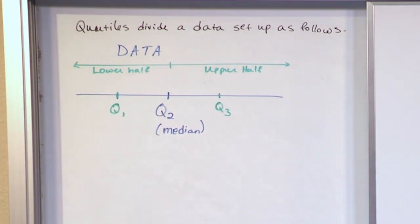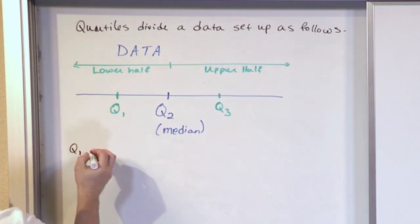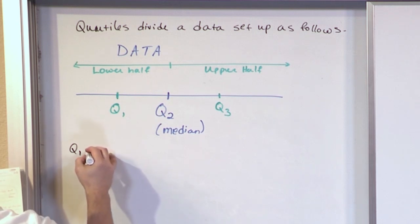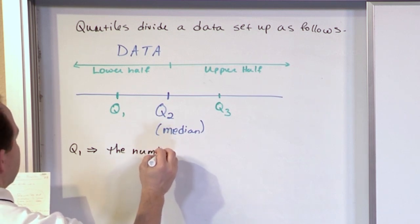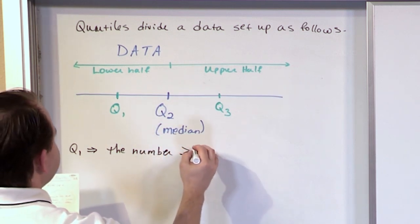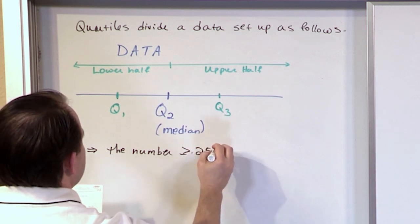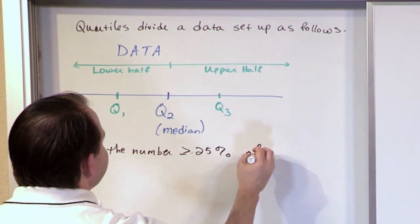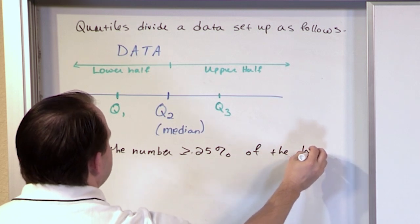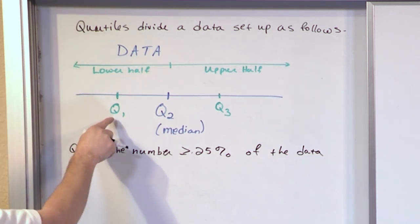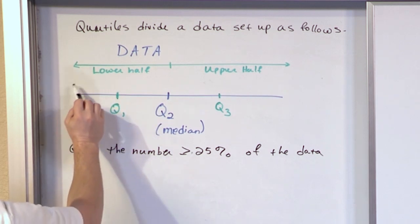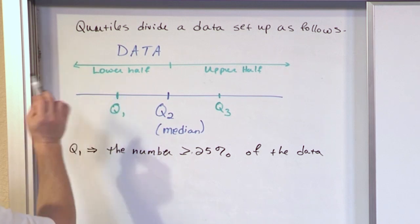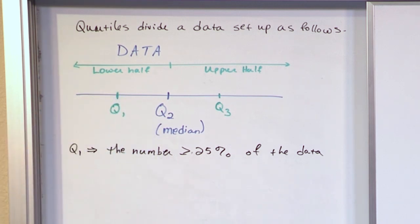So basically what you have — Q1 is called the first quartile, and it is the number greater than or equal to 25% of the data. Which makes sense because Q1 is here. So if you have data all down here, Q1 is greater than 25%. Q1 is the number just right at 25% of the data.